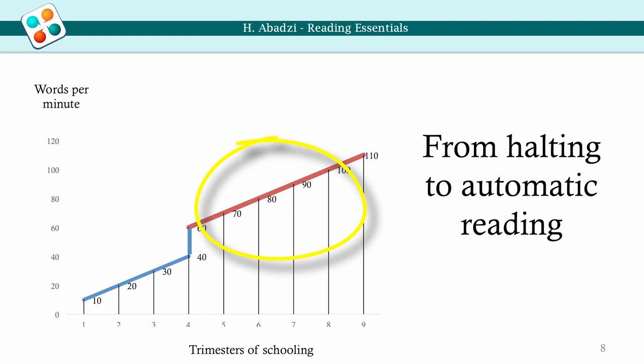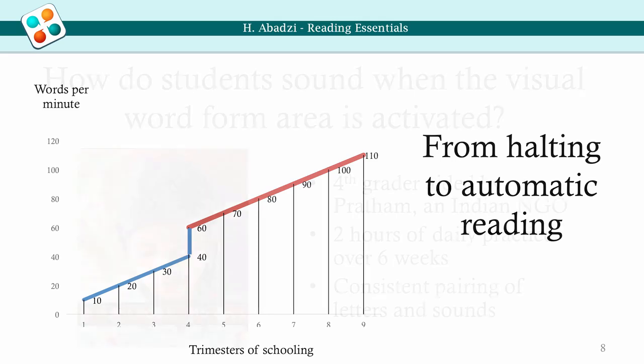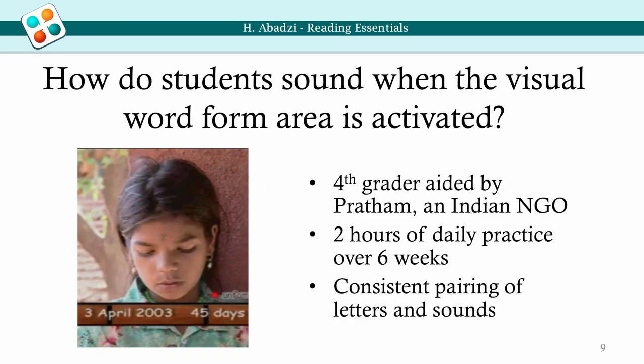Without the ability to use the face recognition circuits, humans would read very small amounts of text. Performance before and after activation of the visual word form area sounds different — the latter is more like natural speech. Therefore, common people can hear students read and reasonably judge if they are fluent or reading letter-by-letter.